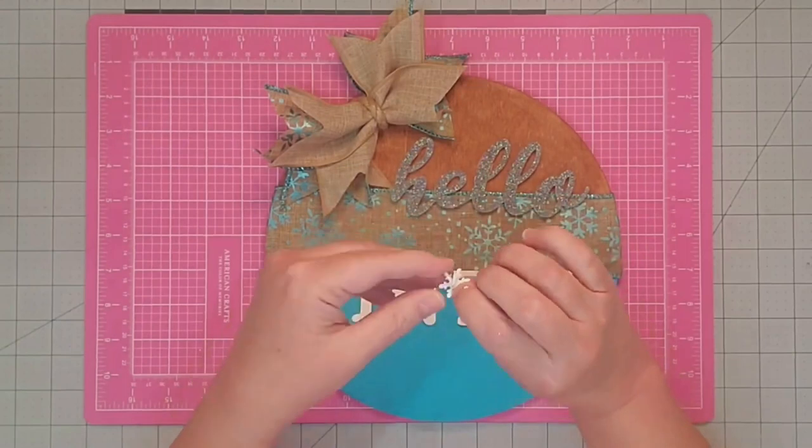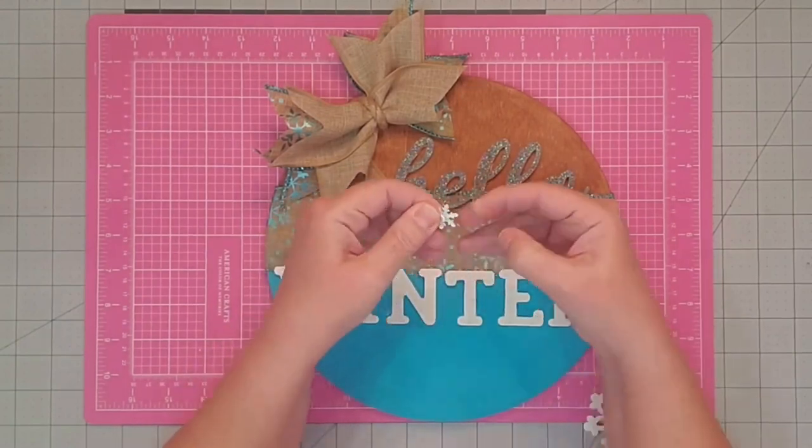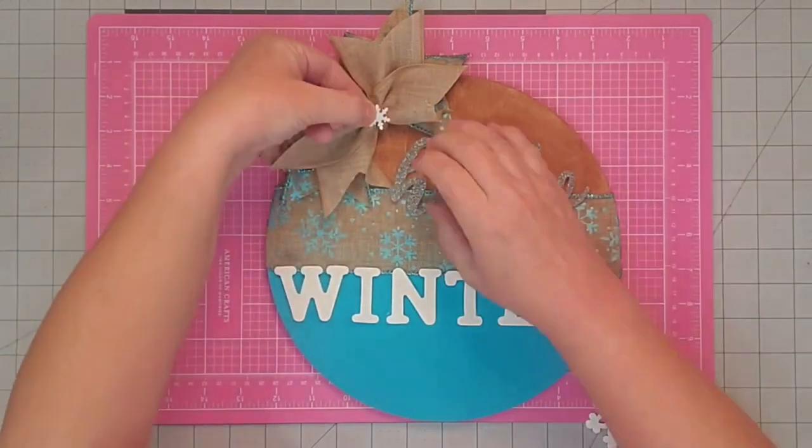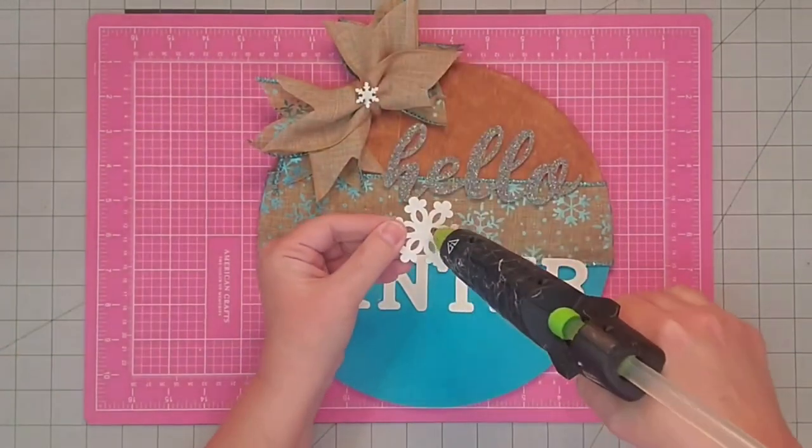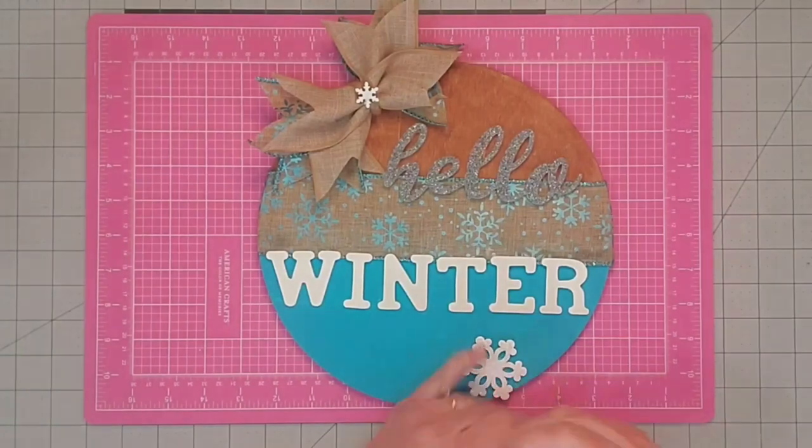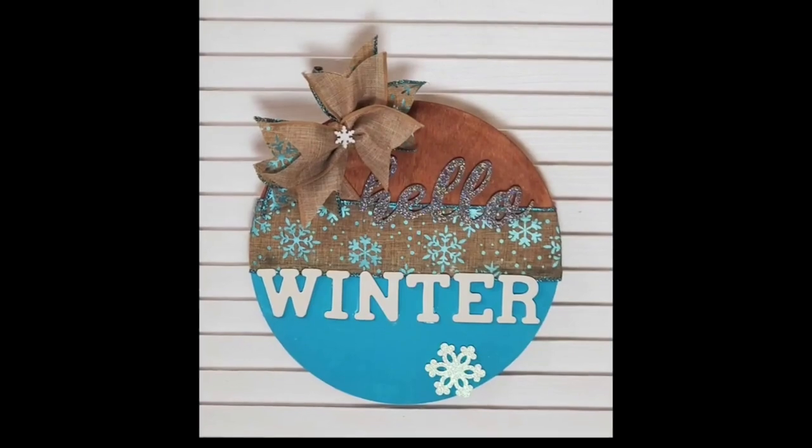I'm going to take the little paper brad and twist down the little prongs on the back, then take some glue and secure it to the middle of the bow just to dress it up a little bit. Then we'll take our wooden snowflake here at the bottom and attach it with hot glue as well. And that's pretty much it for this project.